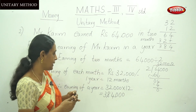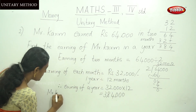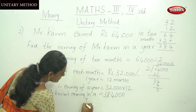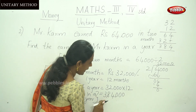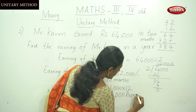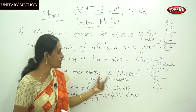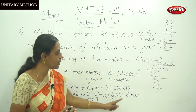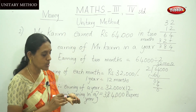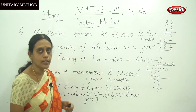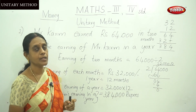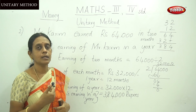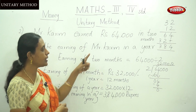384,000 rupees is the earning of Mr. Kareem in a year. Do not forget to put the unit with your answer. Since this is a money topic, the answer must be in rupees and paise. Always write the unit on the right side of the answer. This is the unitary method — find the cost of one item, then use it to find the final answer.